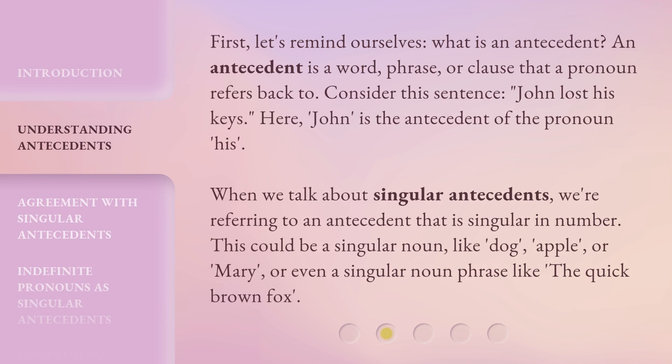First, let's remind ourselves: what is an antecedent? An antecedent is a word, phrase, or clause that a pronoun refers back to. Consider this sentence: 'John lost his keys.' Here, 'John' is the antecedent of the pronoun 'his.'